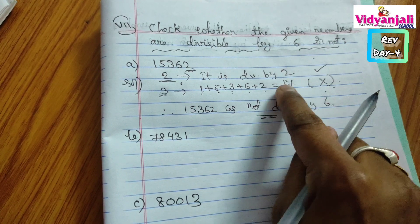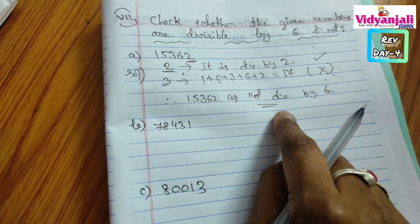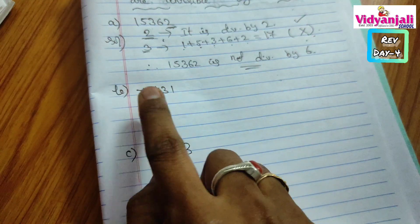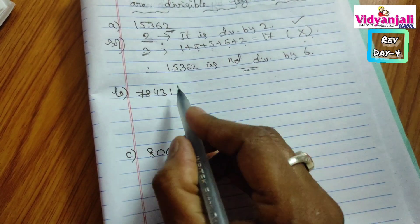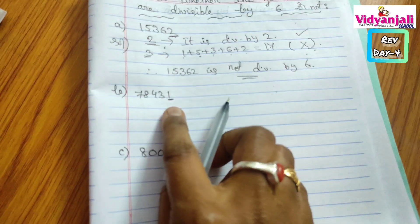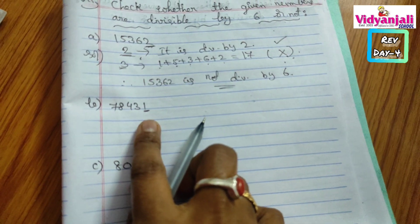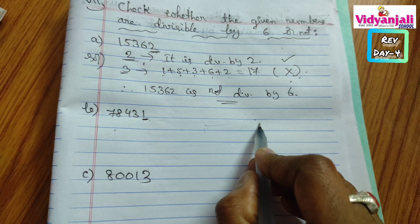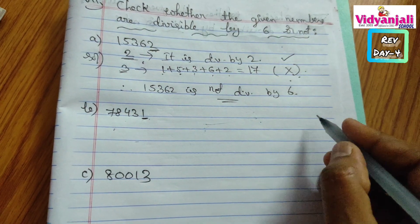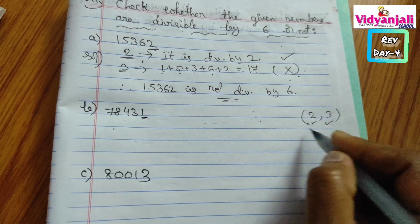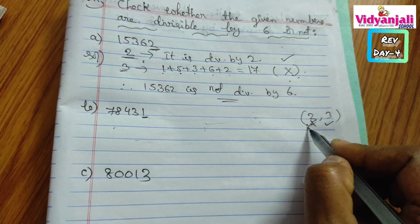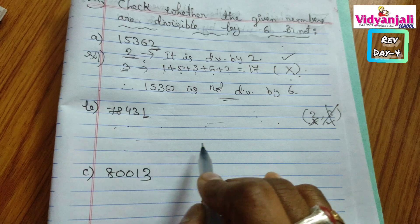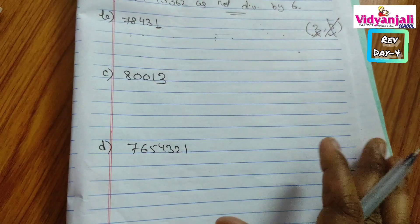If the number is divisible by both 2 and 3 only then we say it is divisible by 6. But it failed in 3 divisibility. Here is a clue: if the 1's digit is odd, the number is not divisible by 2, so no need to check 3 divisibility — you can directly say it is not divisible by 6. Because it must pass both 2 and 3 divisibility to be divisible by 6. Try the remaining questions.